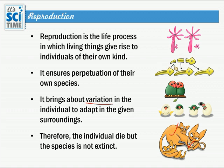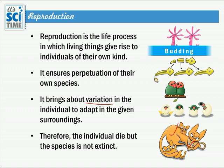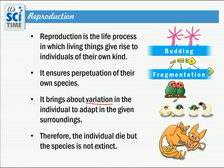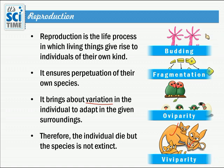From these examples, in the first one only one parent produces offspring — this is called budding, occurring in animals like hydra. Planaria breaks into different parts to produce new ones — this is called fragmentation. The other two methods are: giving birth through an egg, called oviparity, and directly giving birth to young ones, called viviparity.